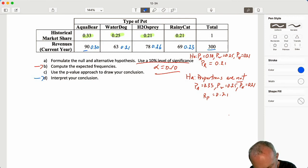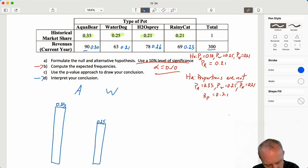So for Aquabear, let's say here's 33%. This is for Aquabear. For Water Dog, they were at 25%, so a little bit less, maybe down here. H2 Osprey was at 21%, so a little bit less again. And Rainy Cat was exactly the same there as Osprey, so put them also at 0.21%. Now so this is historical.